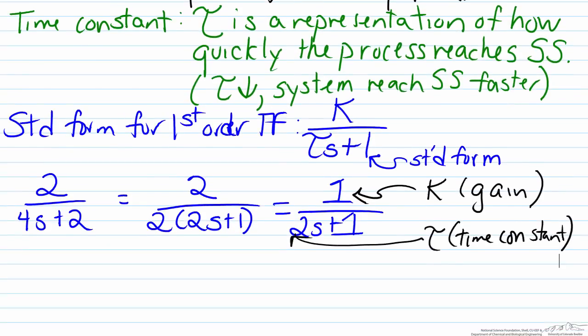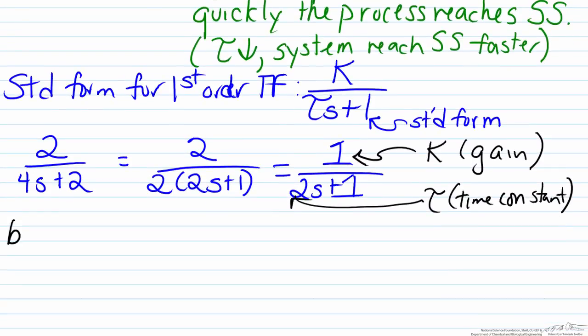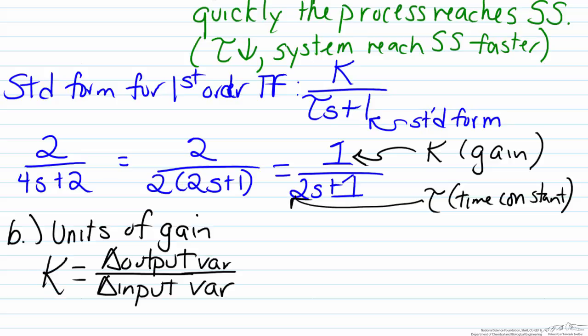This leads us into part B, where part B is asking for what are the units of the gain. In order to look at the units of the gain, just recall the definition. The output variable was the exit concentration C prime, and the input variable was the feed concentration Cf prime.